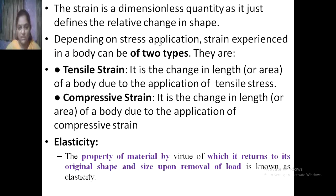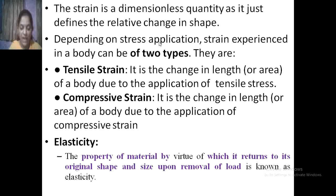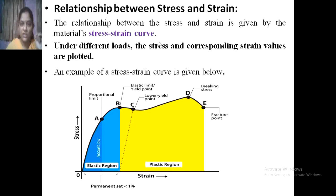There are two types of strain: tensile strain — change in length due to tensile loading — and compressive strain. Elasticity is the property of a material by virtue of which it returns to its original shape and size upon removal of the load. We have covered the relationship between stress and strain — the stress-strain curve — showing how material properties change in the elastic region as well as in the plastic region.